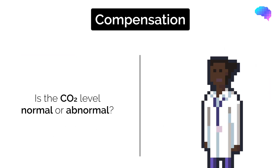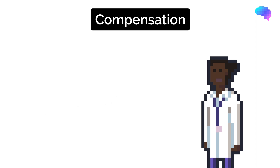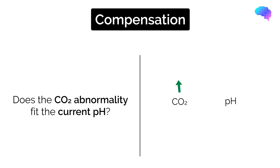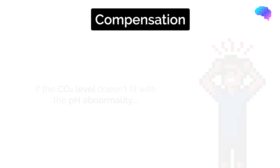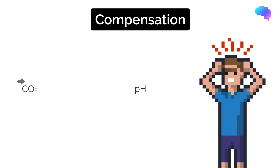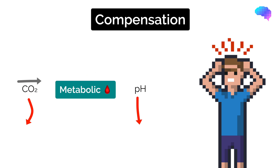So we need to ask ourselves: is the CO2 normal or abnormal? If it's abnormal, does this abnormality fit with the current pH? For example, if the CO2 is high, it would make sense that the pH was low, suggesting this was more likely a respiratory acidosis. If the abnormality in CO2 doesn't make sense as the cause — for example, normal or low CO2 and a low pH — it would suggest that the underlying cause for the pH abnormality is metabolic.